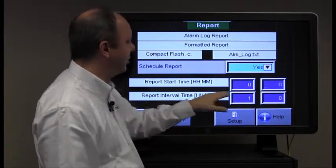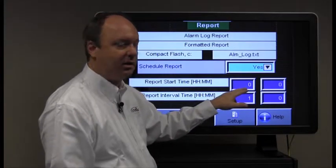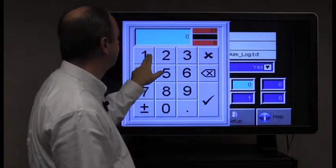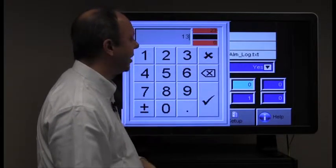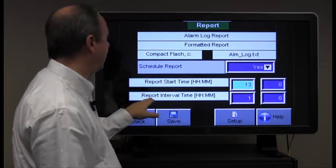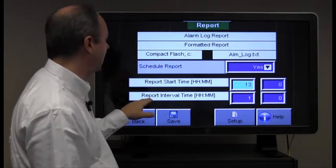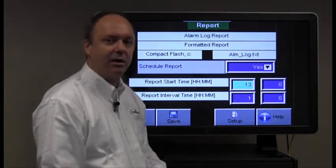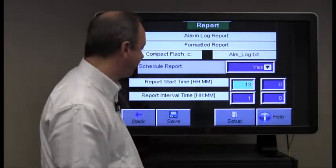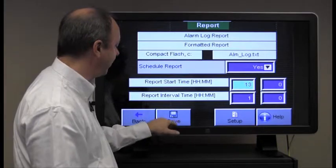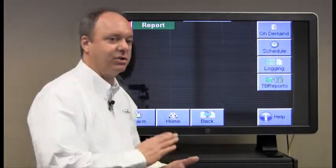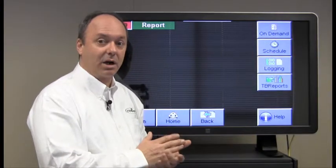The report start time in this particular case is set to midnight. If you wanted that to be 1 p.m. for instance, then you would set that to 1300 hours. It's based on a 24 hour clock. And you want this alarm report to occur on an interval of every hour, which again you could change to whatever interval you'd like.